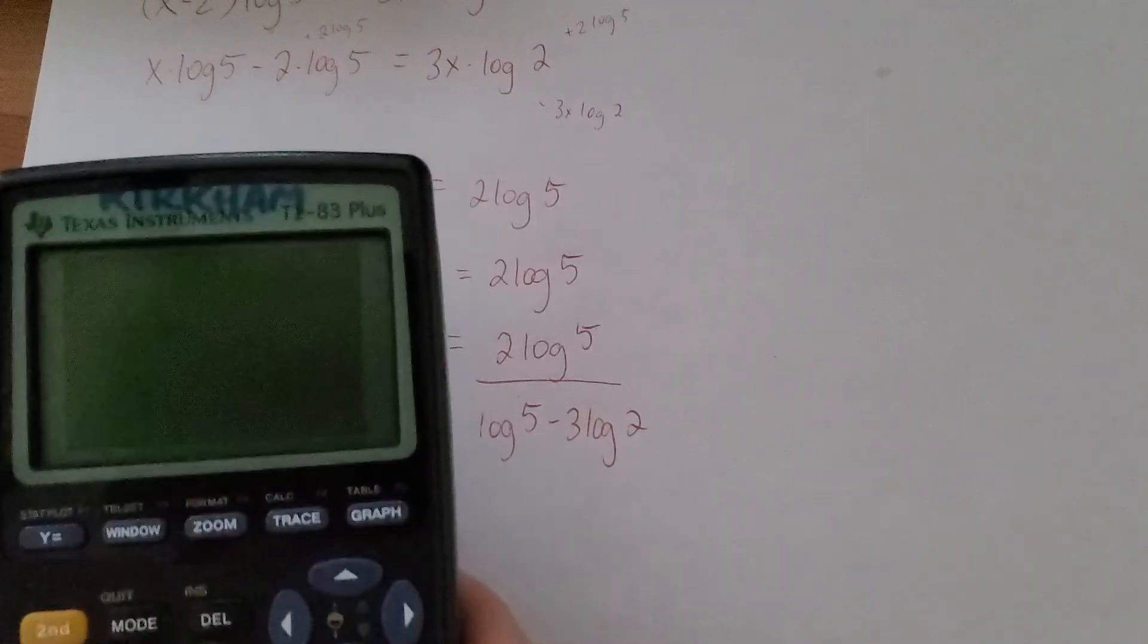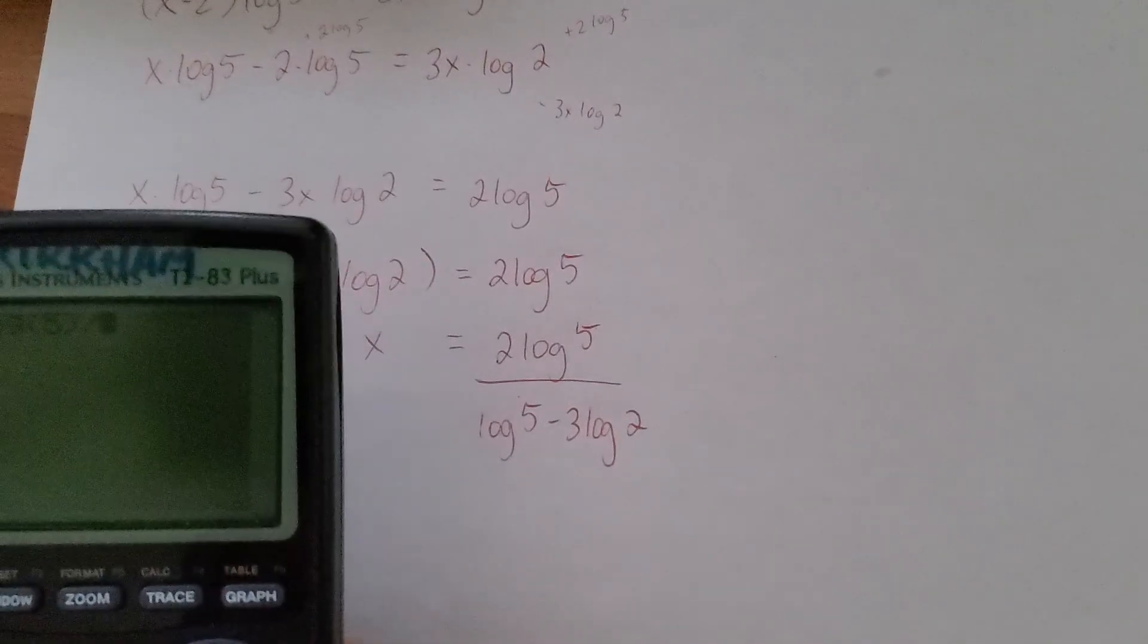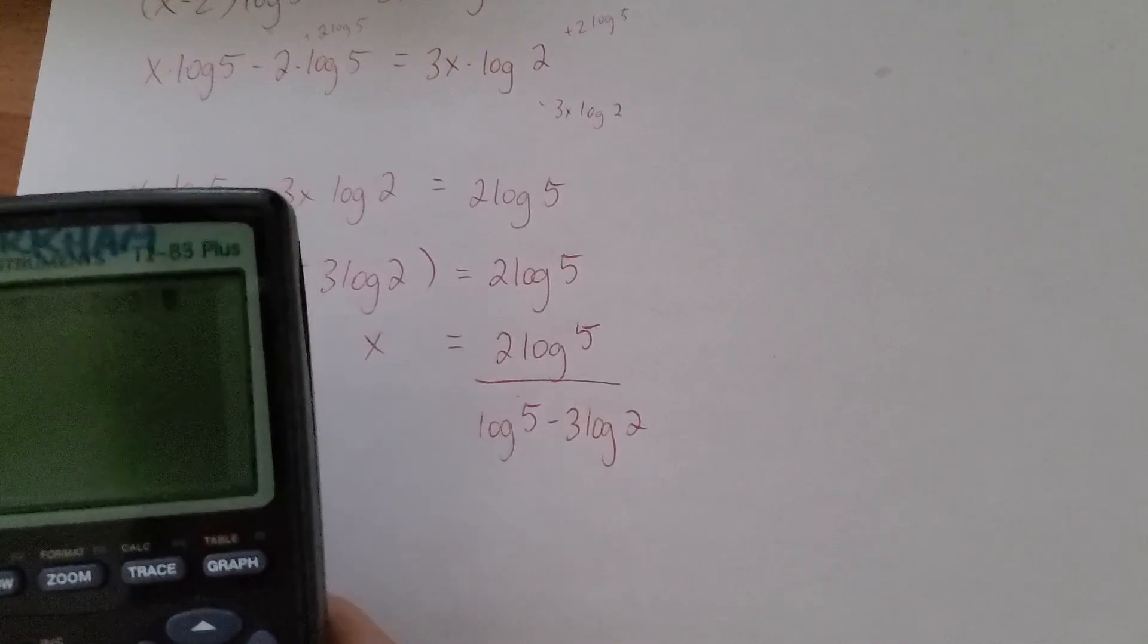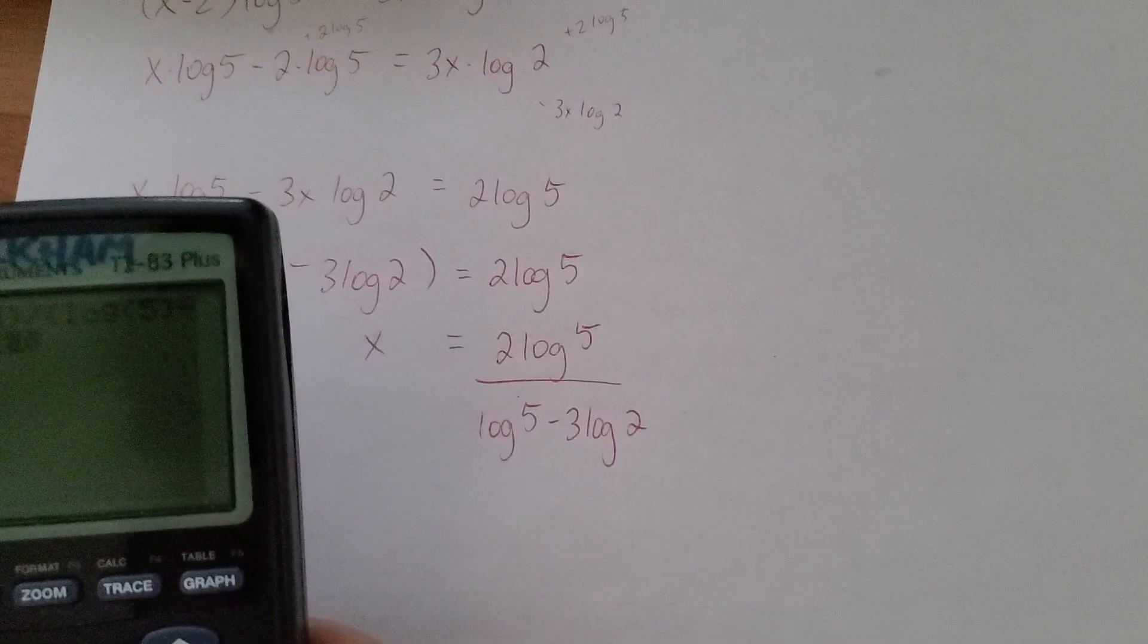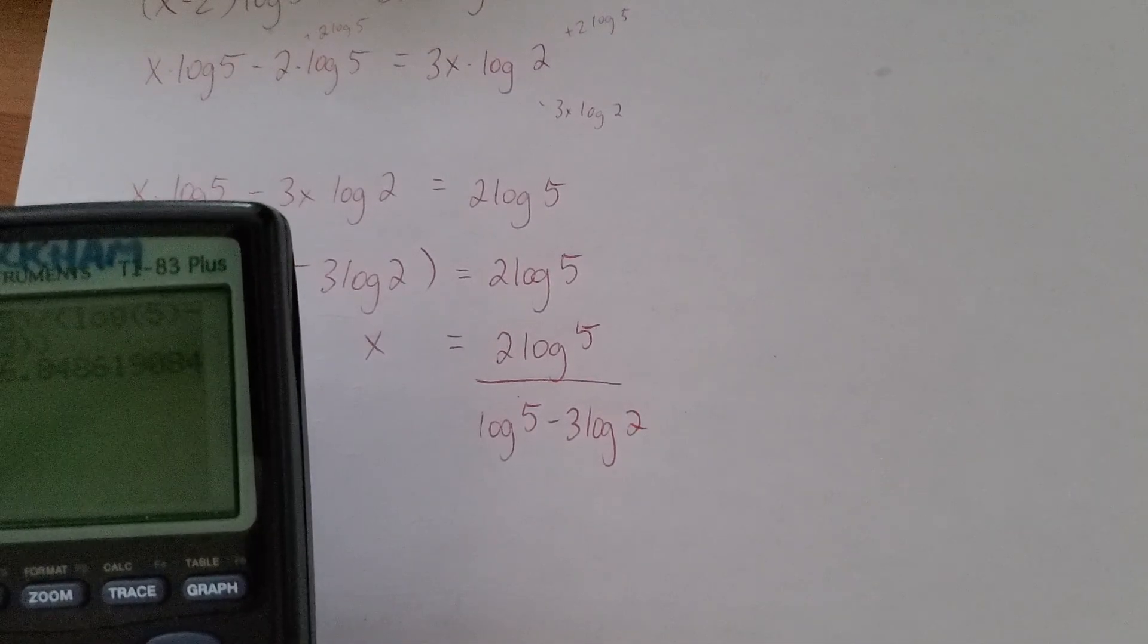So we'll get the decimal here. That's going to be 2 log 5 divided by log 5 minus 3 log 2. I get negative 6.85.